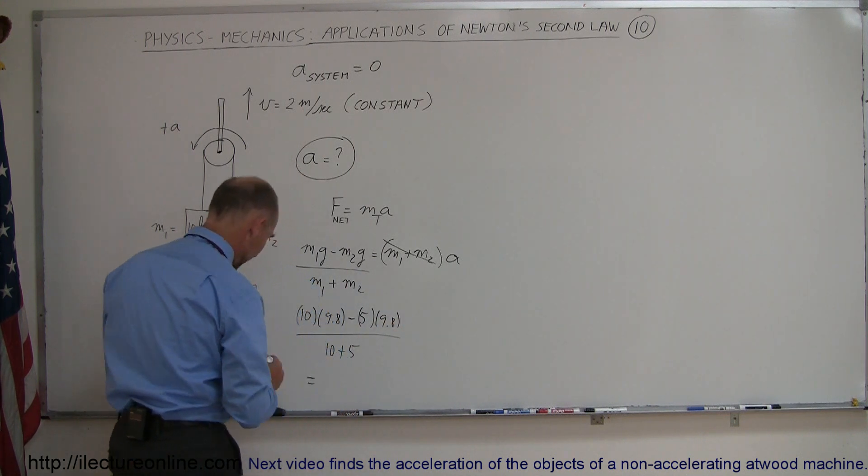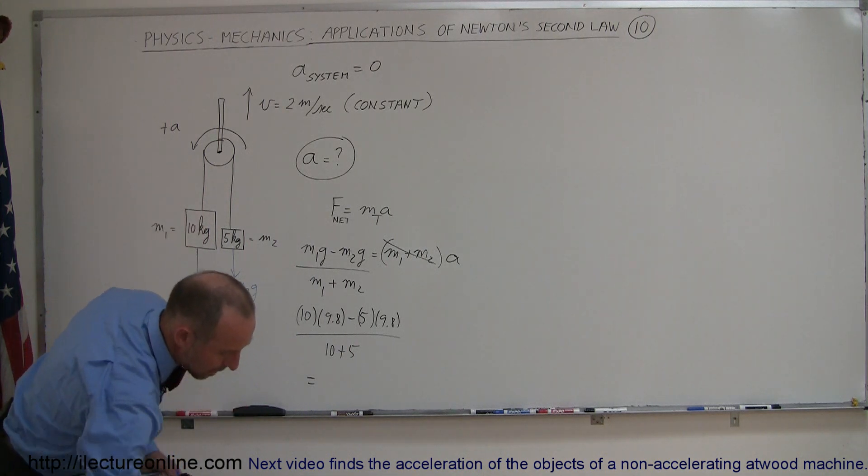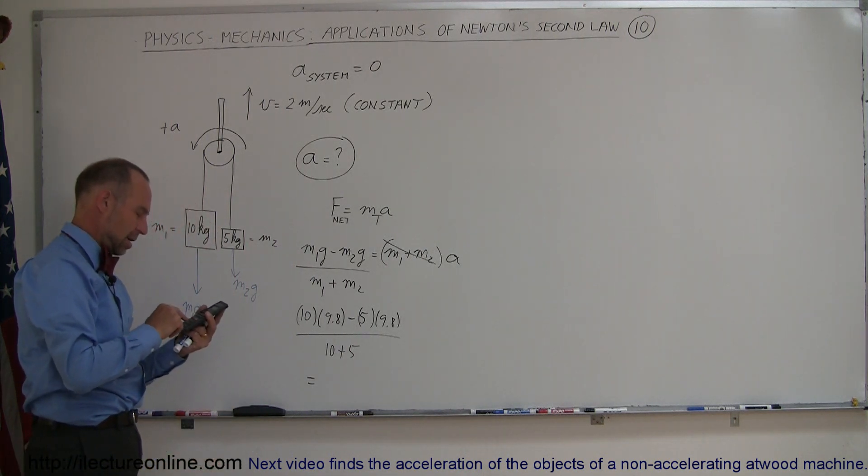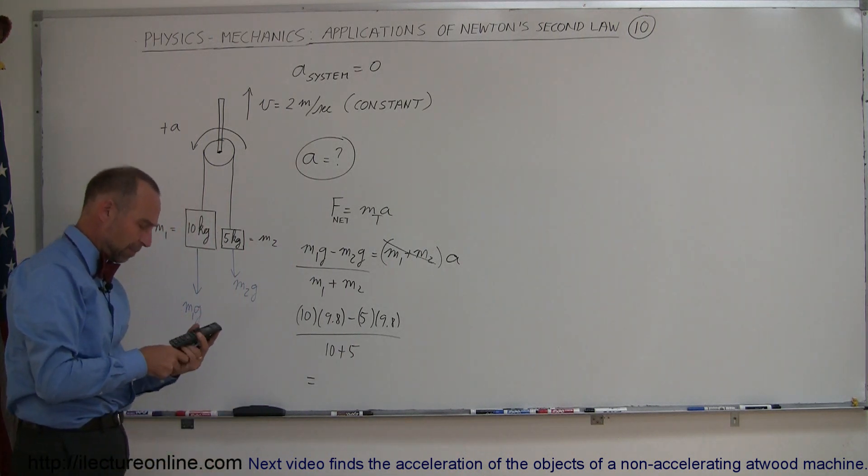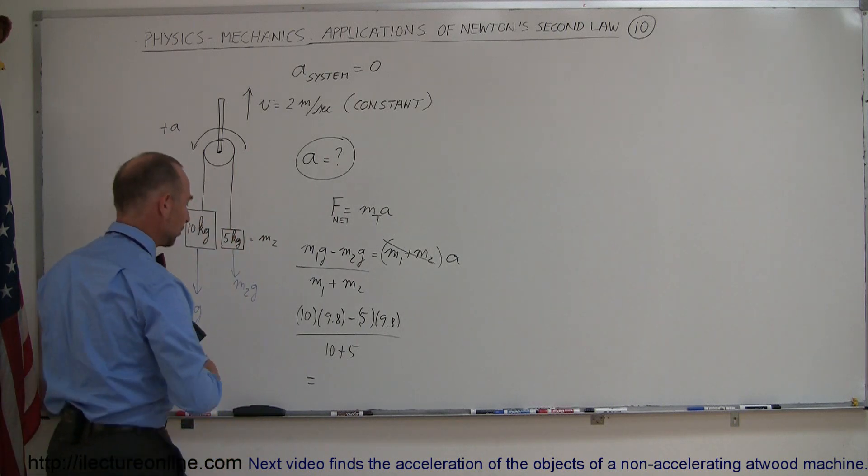And we can see then that this will be 9.8 divided by 3, which equals 3.27 meters per second squared.